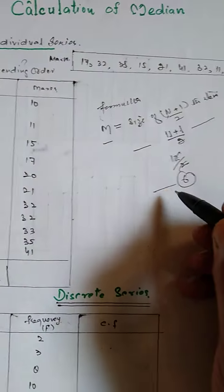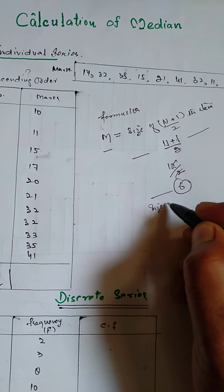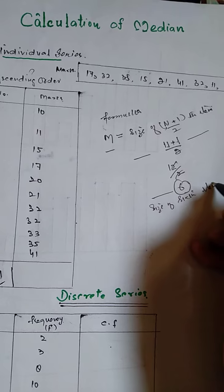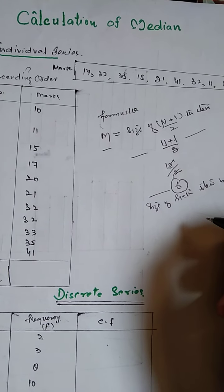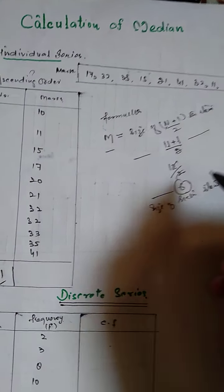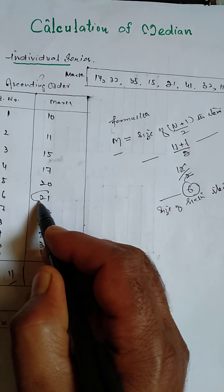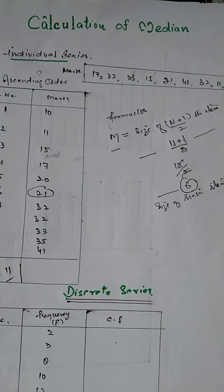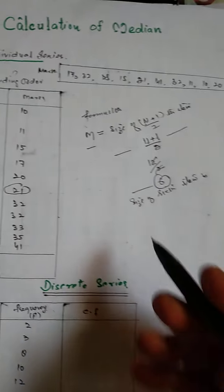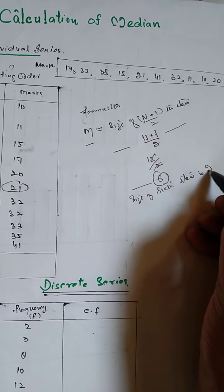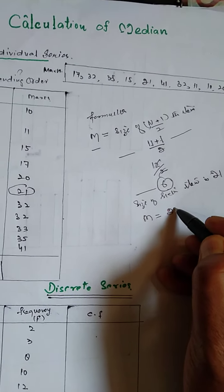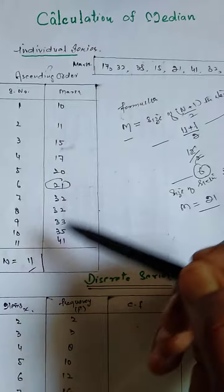So 11 plus 1 is 12, by 2 it is 6. Look, if we see what is the size of sixth item, it is 21. Size of sixth item is 21.